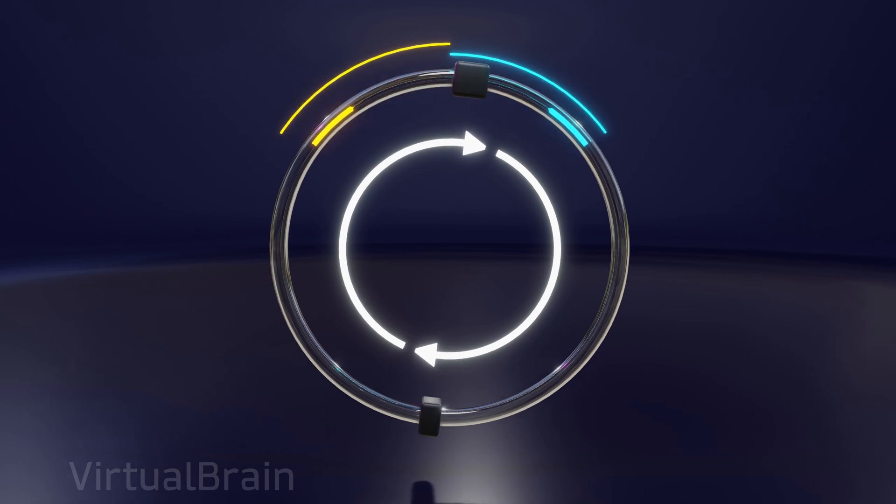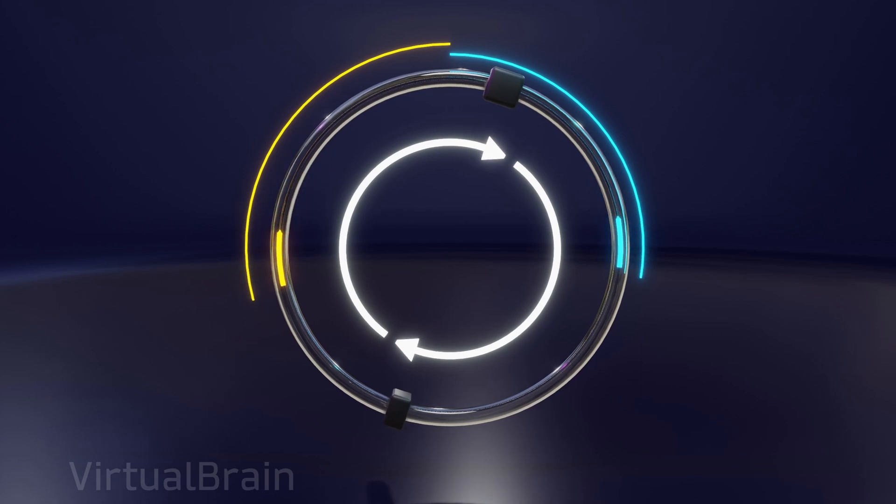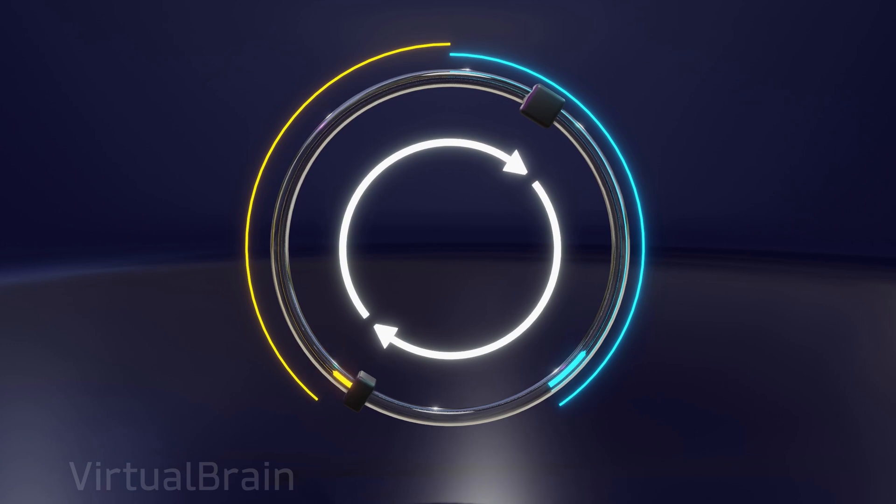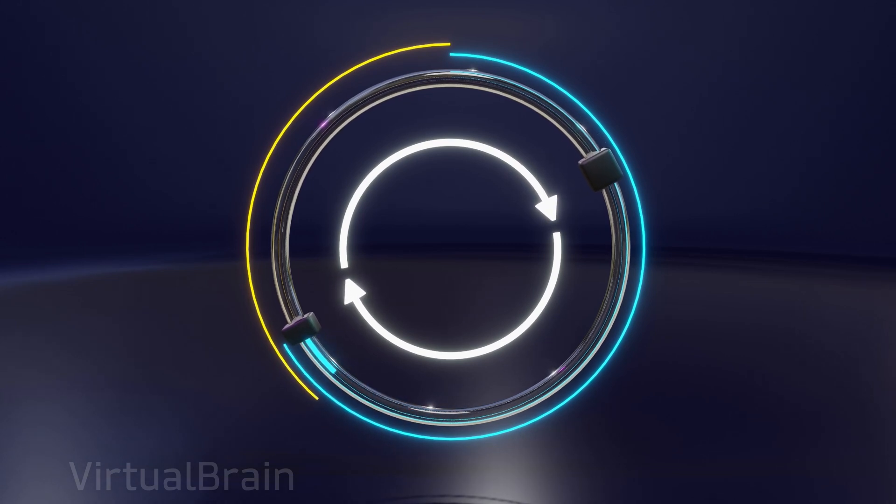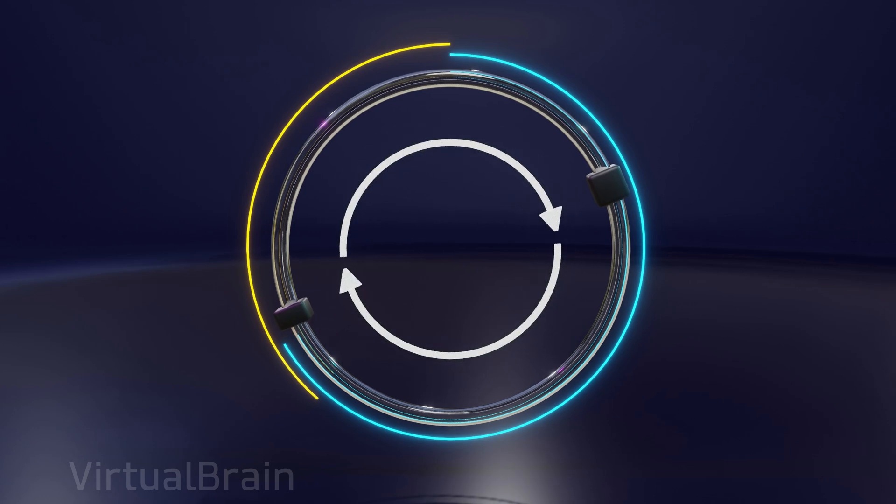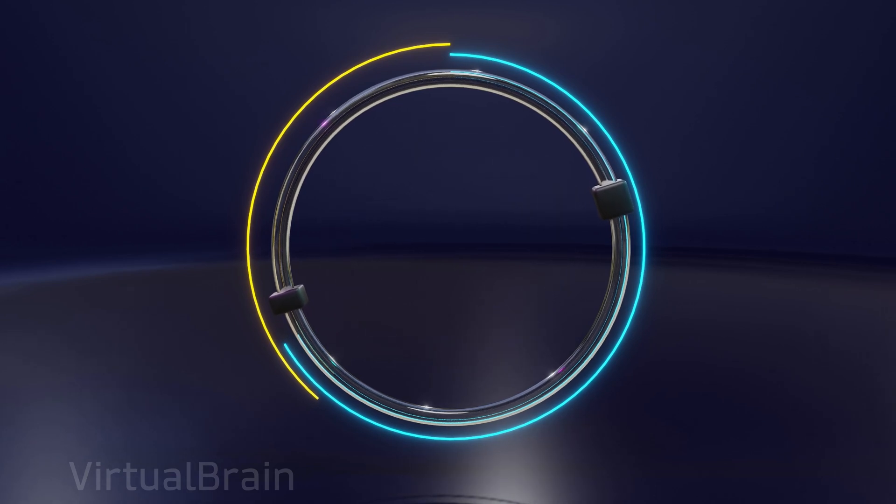The beam emitted in the same direction as the rotation of the system will have to travel a longer distance before reaching the end of the path, since the end point will basically be moving away from it. On the contrary, the beam traveling in the opposite direction of the rotation of the system will travel a shorter distance, because the end point will be getting closer to it. This difference in the distance traveled by the light beams is the key to calculating the angular velocity of the system.